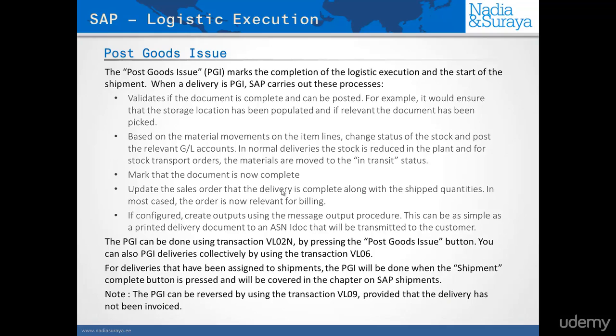The document is then marked as complete, the sales order is updated to say that the delivery is complete, and in most cases the quantity is made relevant for billing. If configured, the system will now create some outputs using the message output procedure — this could be a simple ASN document or delivery note, and we could even create an EDI to send an ASN to the customer.